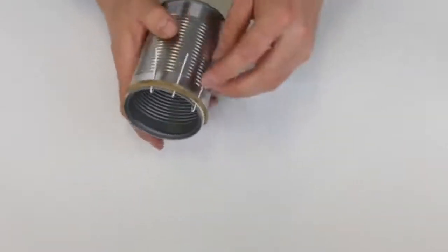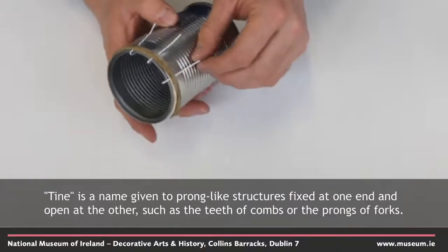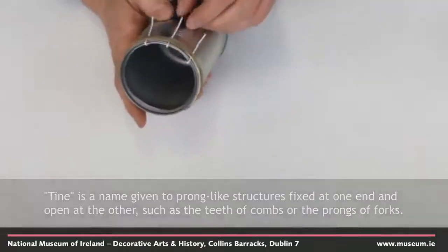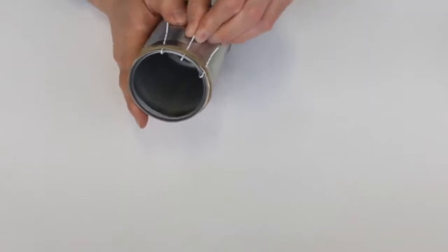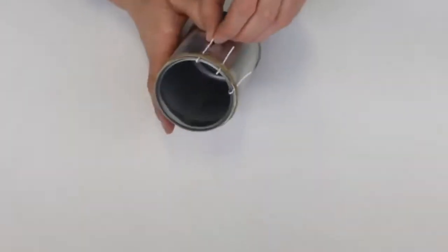So with these, in a thumb piano these parts here are called tines. The longer the tine, the lower the note will be. So if I adjust these slightly, I'll get different pitches.